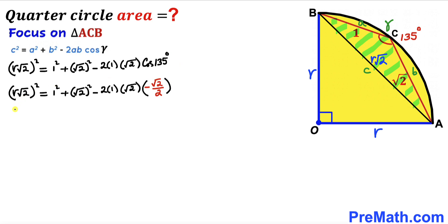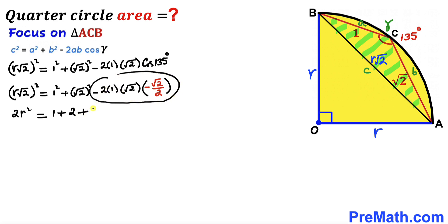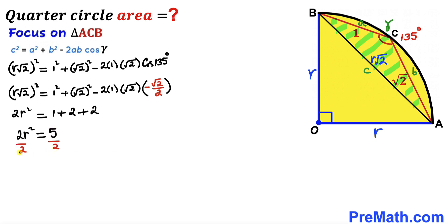Simplifying the equation gives 2r² = 1 + 2 + 2, which simplifies to 2r² = 5. Dividing both sides by 2 to isolate R², we get R² = 5/2.